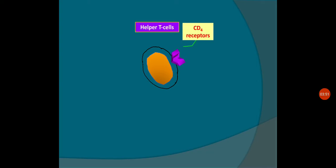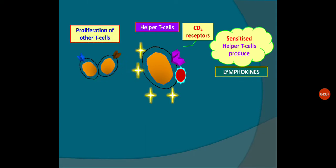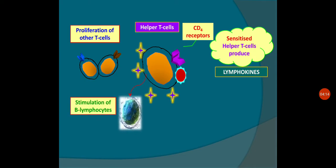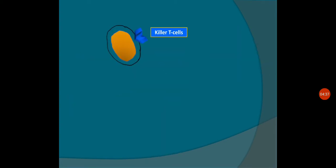In case of helper T-cell, it has CD4 receptors. These receptors get activated or sensitized by antigen interaction, releasing lymphokines. This proliferation activates other T-cells and stimulates B-lymphocytes. As a result, such mechanism attracts macrophages. Macrophages are another type of immune cell found in tissues, and they deal with the antigen so that it gets lysed.